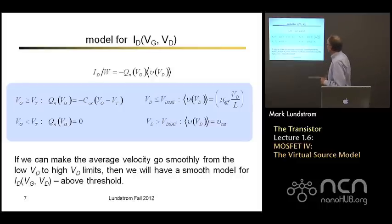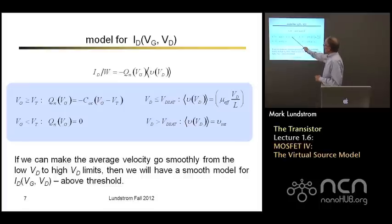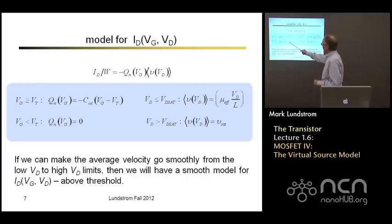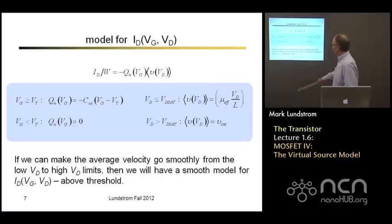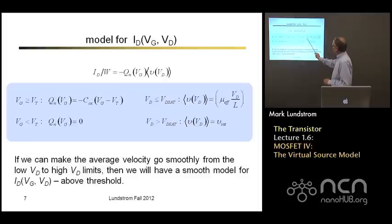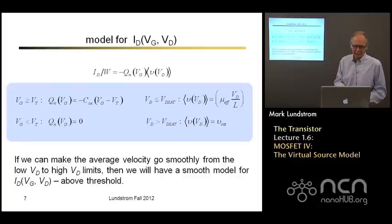So we have an IV expression then: we can always write the current as charge times velocity. Above threshold, we'll use this simple expression for the charge. Below threshold, we'll ignore the charge and just assume that there is no charge. Later on — next week when we talk about MOS electrostatics — we'll try to do a better job so that we can describe the subthreshold characteristics. And we have expressions for the velocity under small and high drain voltage, and we'd like to smoothly make that transition in average velocity from one to the other.